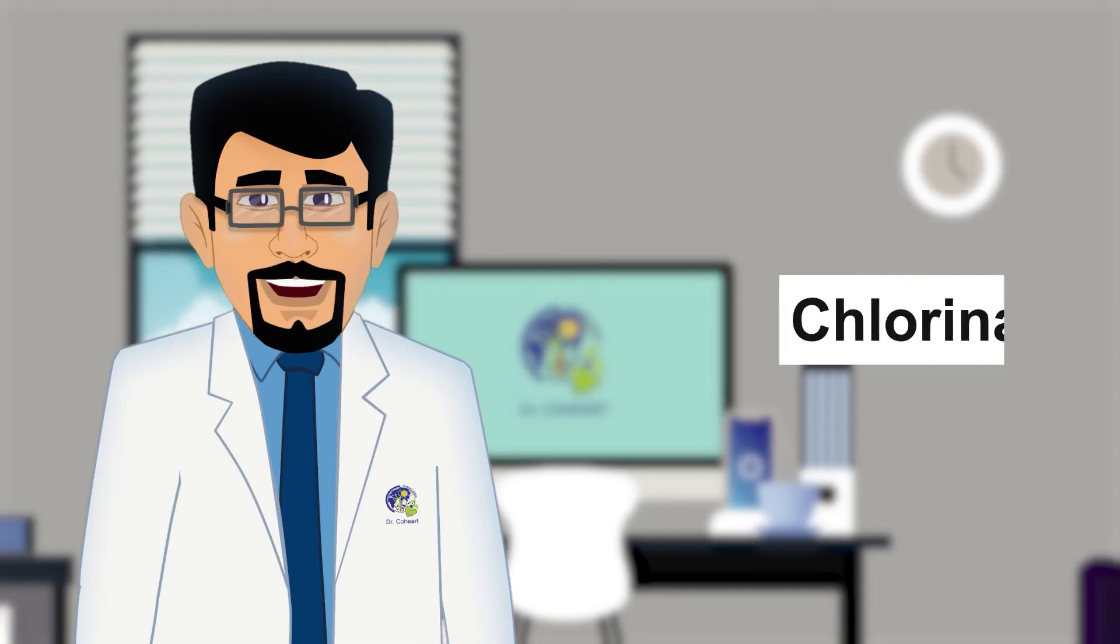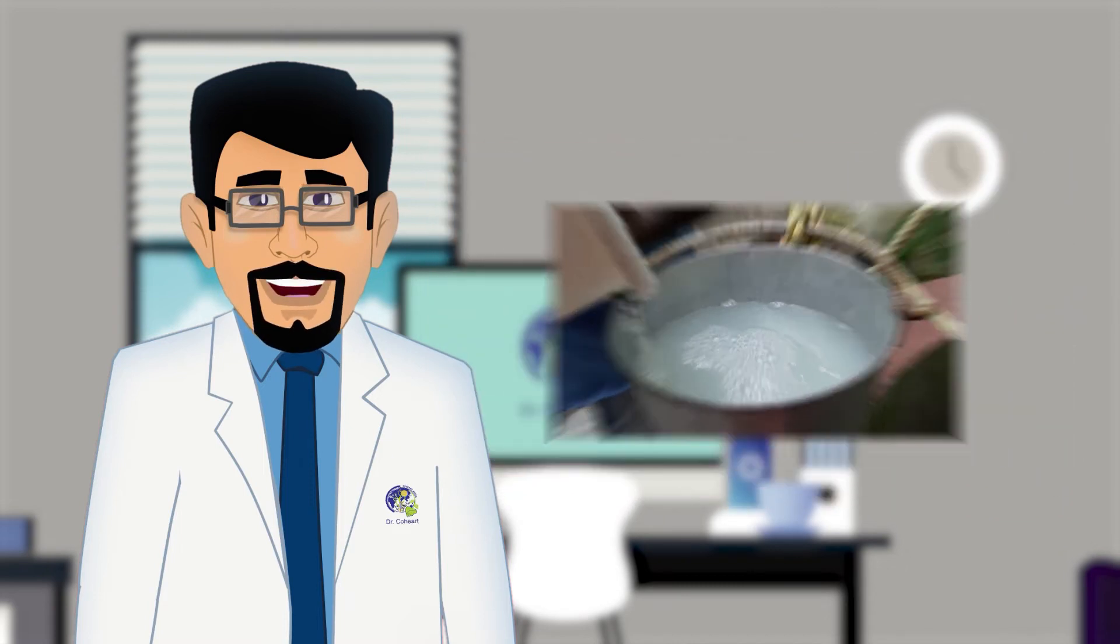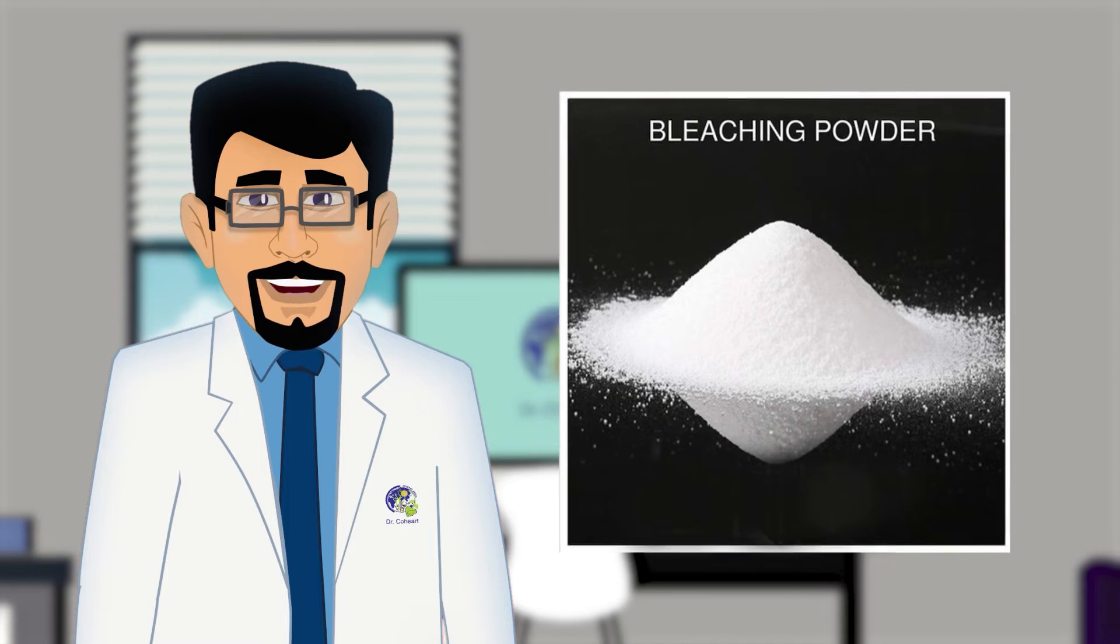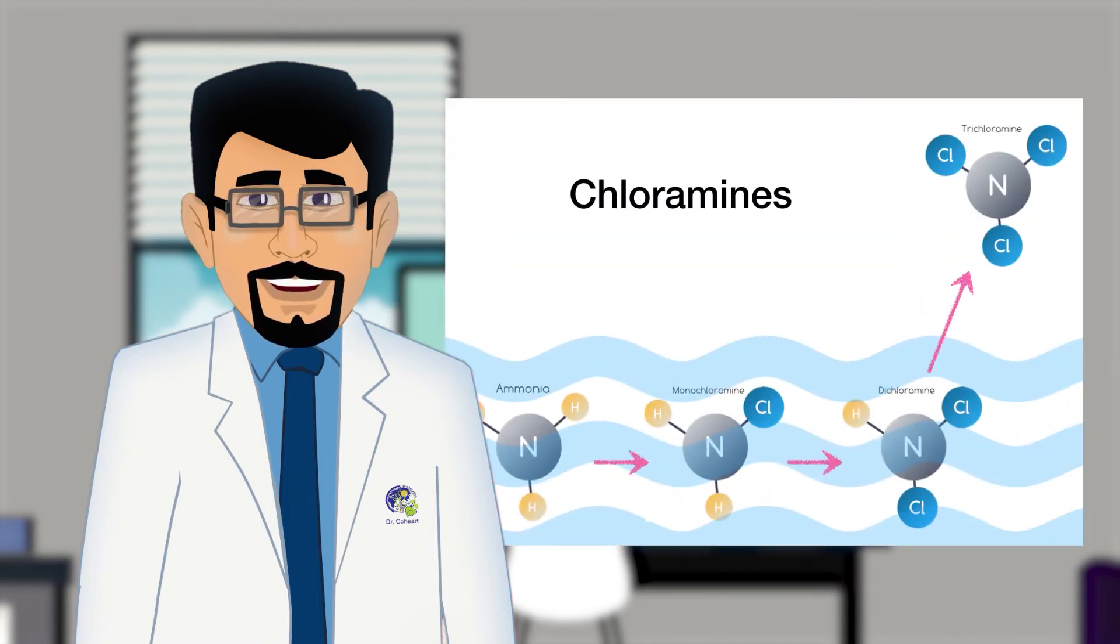Chemical sterilization: chlorination is the best method for the routine treatment of small supplies of water, the chlorine being readily obtainable in the form of chloride of lime or bleaching powder. Chloramine, a combination of chlorine and ammonia, is widely used for the sterilization of water.